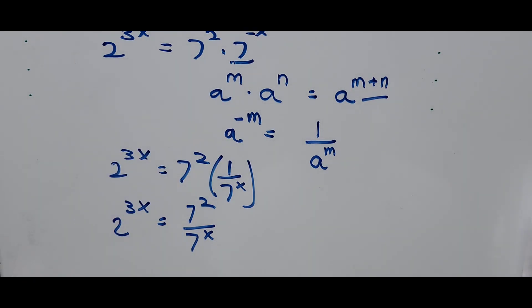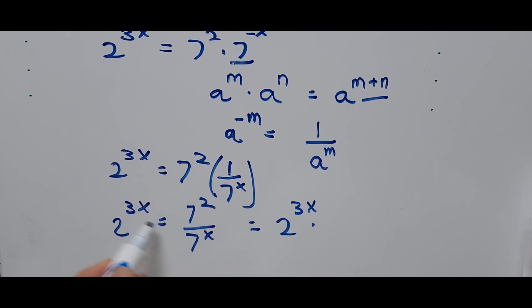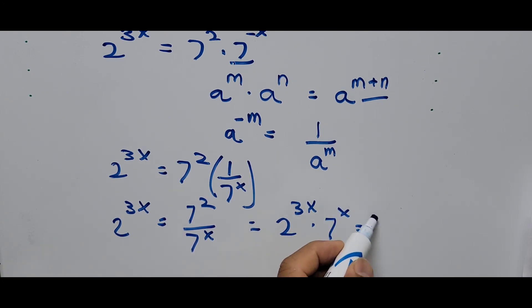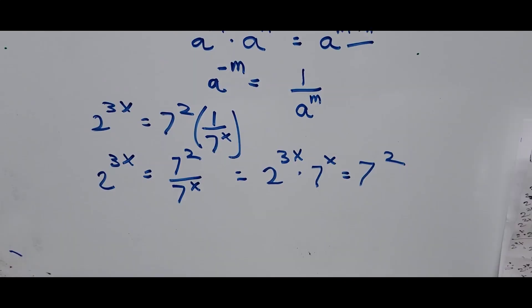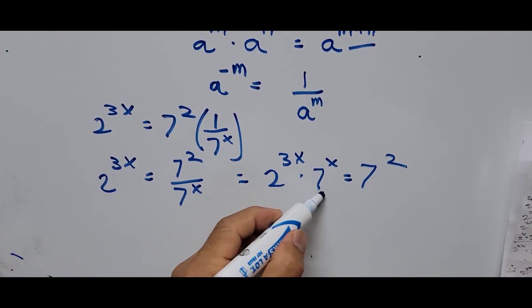From here we cross multiply: 2 raised to 3x multiplied by 7 raised to x equals 7 squared. From here we can further simplify.